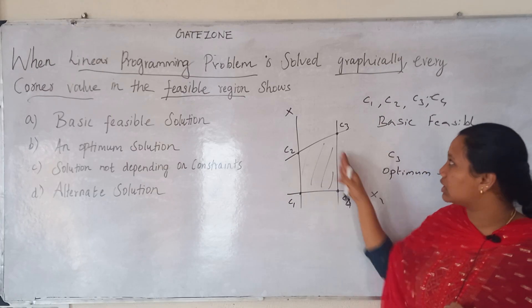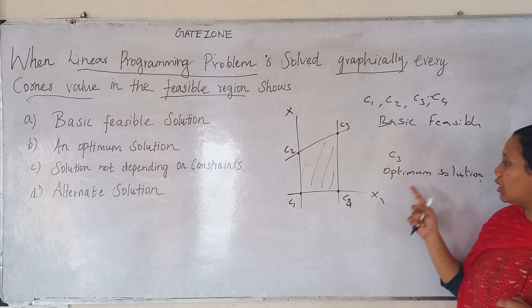So, every corner in the feasible region is the basic feasible solution. Any one corner is the optimum solution.